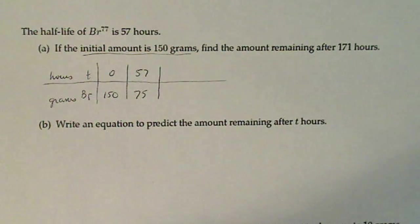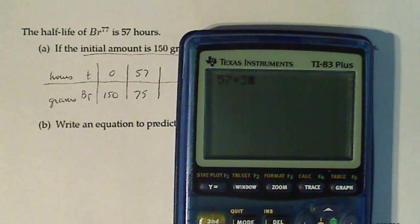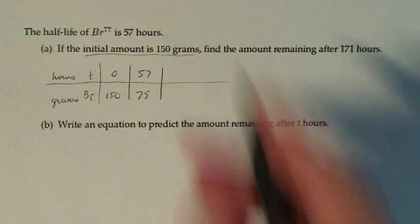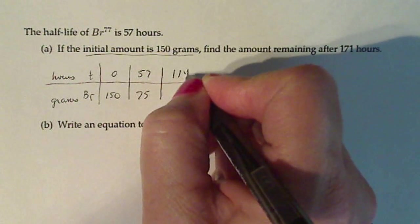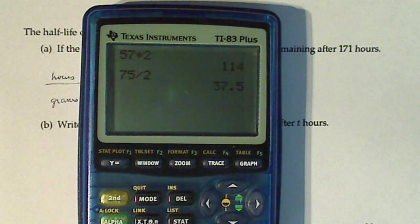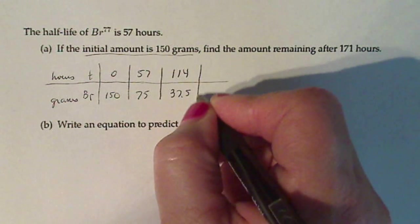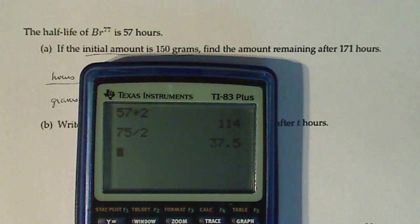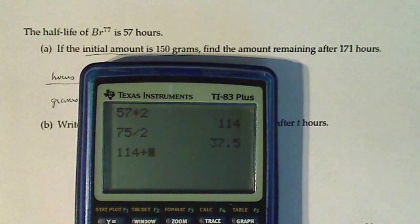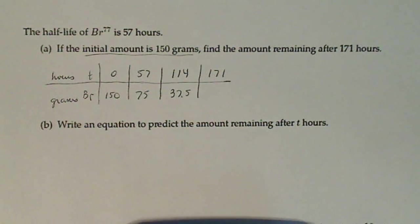After another 57 hours, that's 114. So I should have half of 75, so 75 divided by 2 is 37.5. And another 57 hours I'm at that magical 171, and I should have half of 37.5.